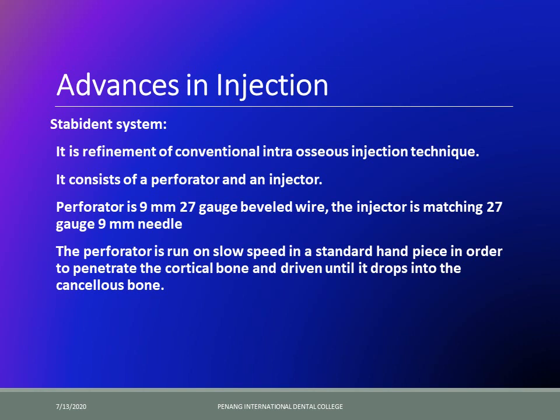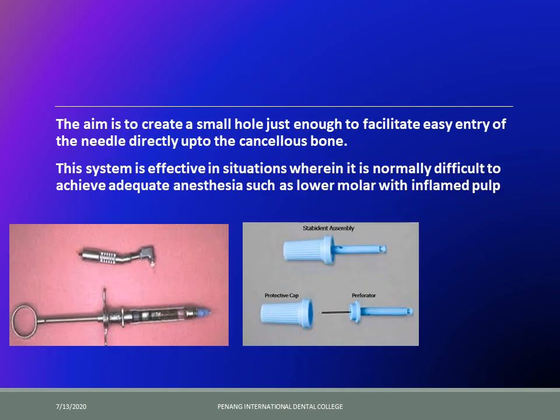The Stabident system consists of a perforator and an injector. The perforator is a very small 27-gauge, 9 mm wire used to drill the bone. Once an orifice is created, the injection is fit into it and local anesthesia is injected directly into the perforated site for better action. The perforator is run on a slow-speed handpiece to penetrate the cortical bone and driven until it drops into the cancellous bone, allowing the local anesthesia to perfuse better. It is most commonly used for lower molars, especially in cases of hot tooth.